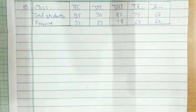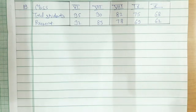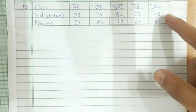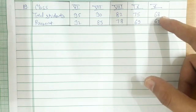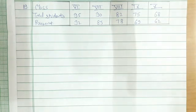This is question number 19 from exercise 22. In this question we have to draw a double bar graph between class and total students and present students. We will draw bars for total students and present students, and we will make each bar of width 0.5 centimeters.